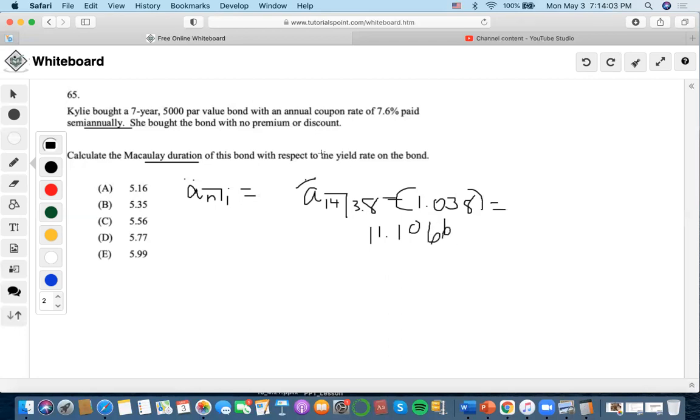So we're going to get 11.1066. Another thing is that this is a semi-annual situation. So not only do we apply semi-annual to the number of years and the interest rate, but we also apply to the Macaulay duration. So we have to divide the Macaulay duration that we got by 2, and we end up getting 5.55, which is closest to choice C.